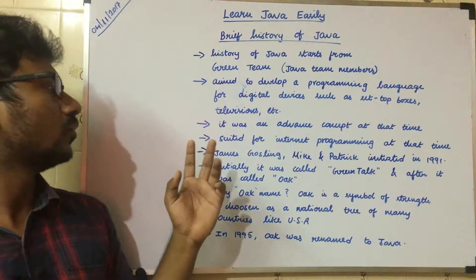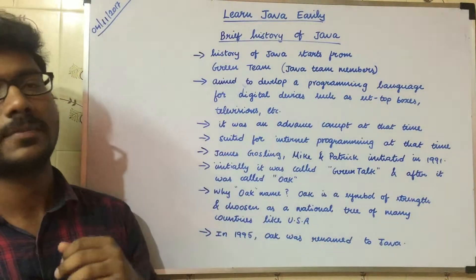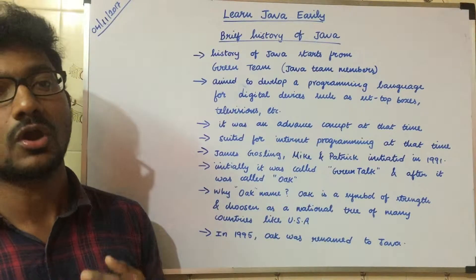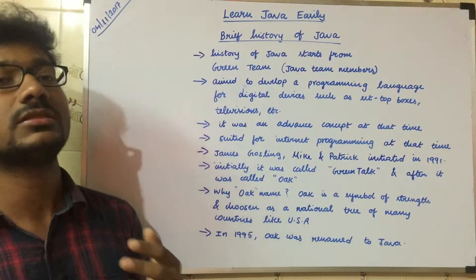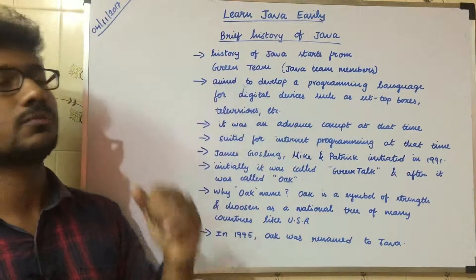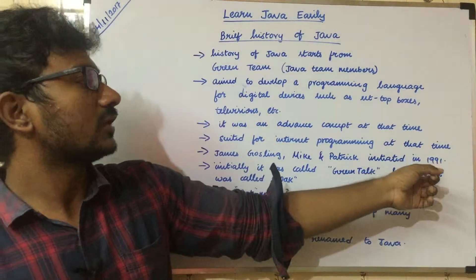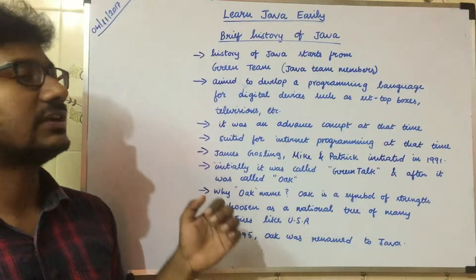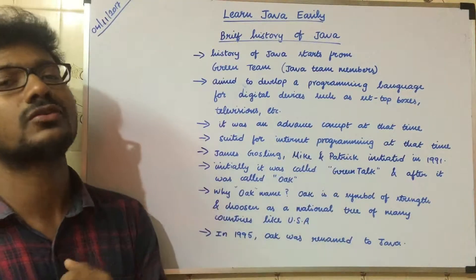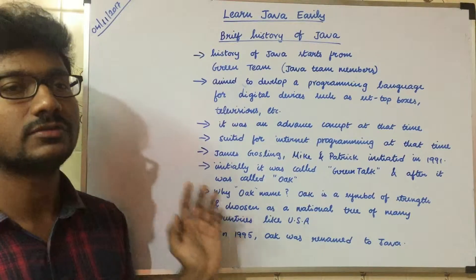Most of you know that Java was founded by James Gosling. But what most of you don't know is that Michael Patrick also contributed many things to make this project a successful one. They initiated this project in 1991, and at that time they called it the Green Talk project — the Green Talk programming language.